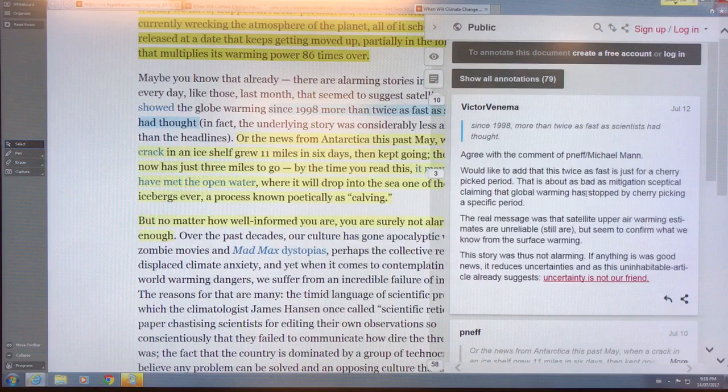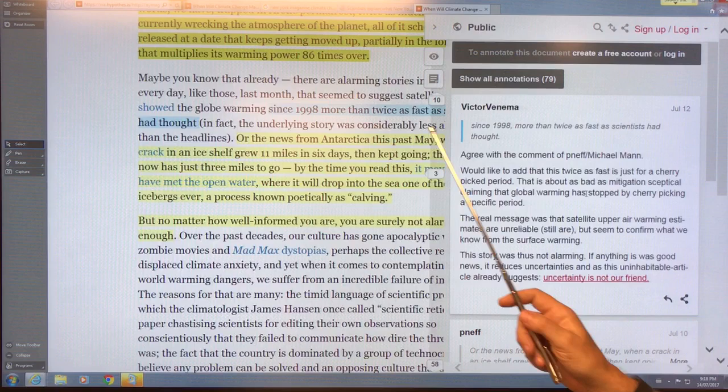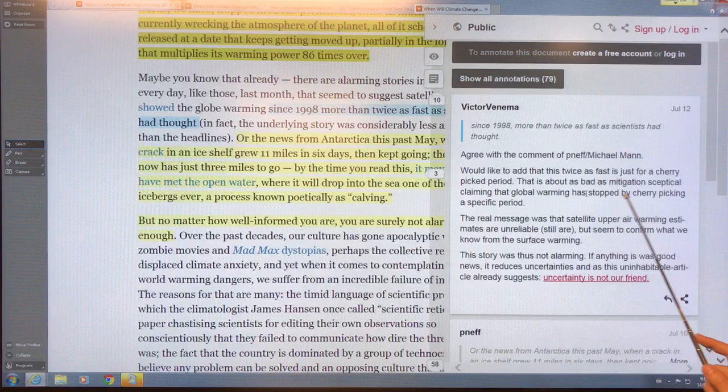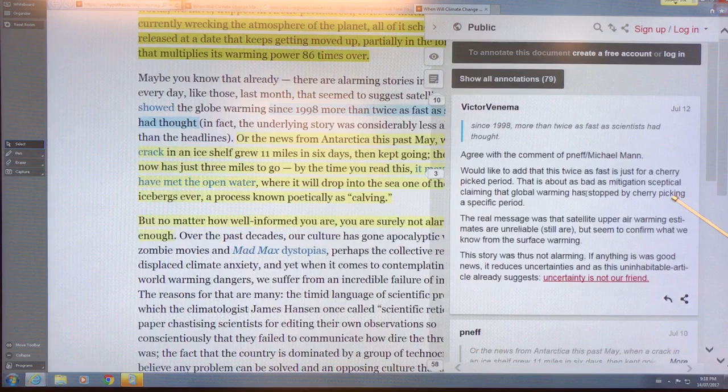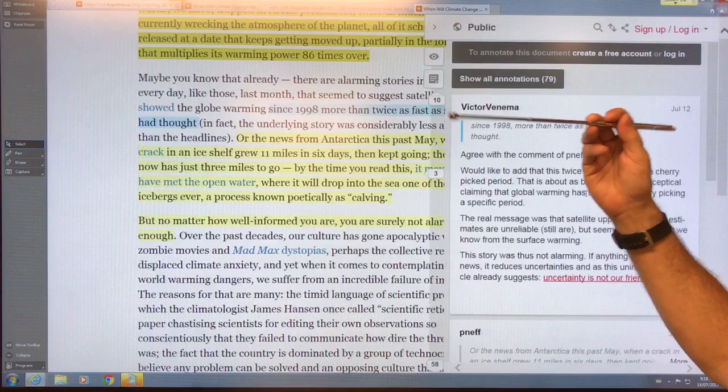We're talking about Antarctica, the Larsen ice shelf, the crack in the ice shelf growing 11 miles. This is just some specific details in a story on how quickly climate is changing and how serious it is. He's saying that talking about it being twice as fast as cherry picking - the story was not that alarming. If anything it's good news, it reduces uncertainty. Uncertainty is not our friend, that's for sure. This is just an article about what's happened with Antarctica recently because it's been in the news.